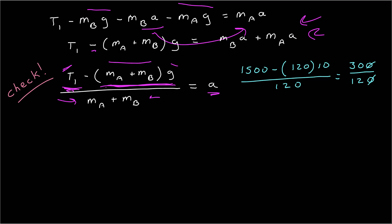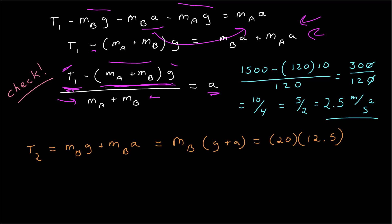Now I can plug in numbers. I don't even need a calculator: 1500 minus 1200 is 300, divided by 120. Dividing top and bottom by 3 gives 10/4, or 5/2, or 2.5 meters per second squared. But that's the acceleration — what I wanted was the tension T2. Using T2 equals m sub b times (g plus a): 20 times 12.5 gives a final tension of 250 newtons. That's not ridiculously large or small, so it makes sense.